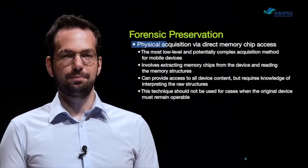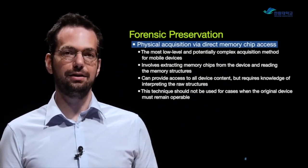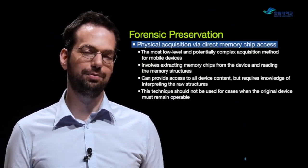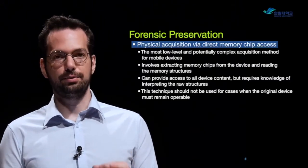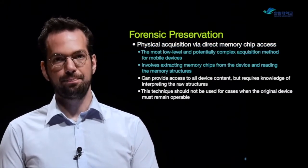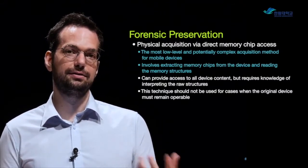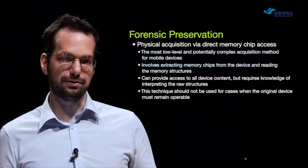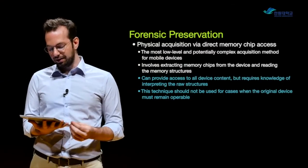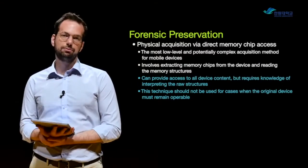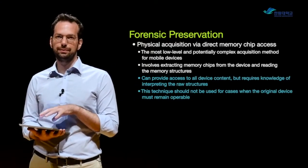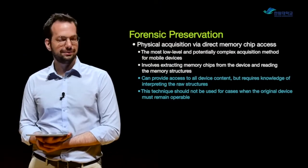Physical acquisition via direct memory chip access is another method where we access the memory in the phone directly. We again have to take apart the phone, and if it isn't designed to be taken apart, we probably destroy it - but we can access the memory chips directly and just read data directly off them. It's the most low-level and potentially complex acquisition method. We get direct raw data and have to do all of the interpretation ourselves - nothing is interpreted for us. This technique should not be used when the original device must remain operable. Korea, for certain types of phones, has really good experts who can do this and put the phones back together, but in most cases the phone is going to be completely destroyed.